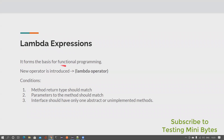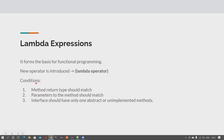We're going to see what lambda expressions are and how they form the basis for functional programming in Java. We'll also see a new operator introduced in Java 1.8 called the lambda operator — similar to arithmetic operators like plus, minus, multiplication. We're also going to see the three conditions that need to match to use a lambda expression in Java: the method return type should match, the parameters should match, and the interface should have only one abstract or unimplemented method.